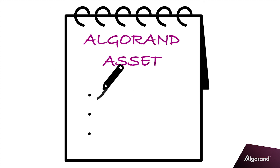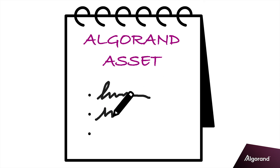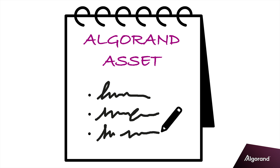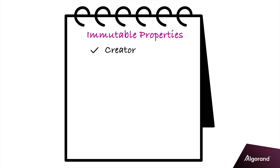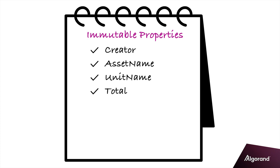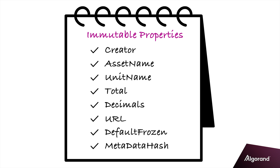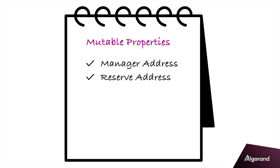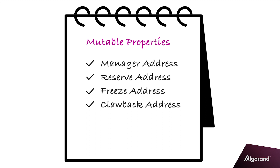Assets are created with a set of mutable and a set of immutable properties that determine the behavior of the asset. The immutable properties include the asset's name and unit name, the total amount of tokens, the number of decimals associated with the token, external URL, and whether the asset is frozen by default. These properties are locked upon creation.